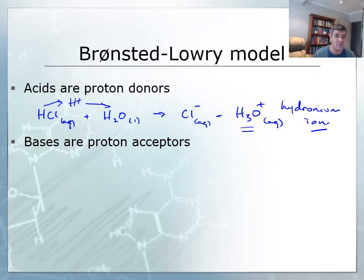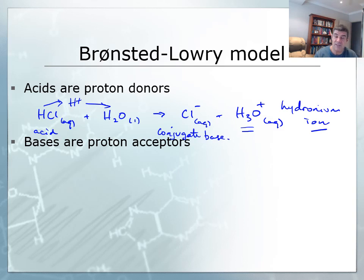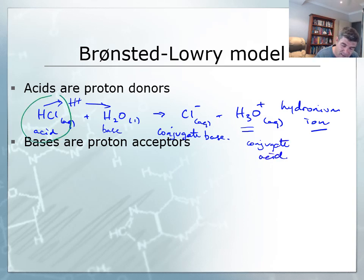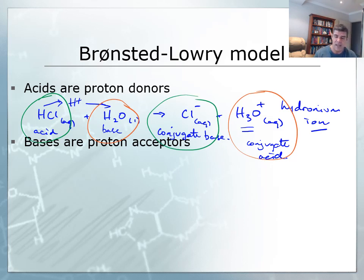We can look at pairs in the Bronsted-Lowry model. An acid that has lost or donated its proton becomes what we call a conjugate base. The substance which acts as a base — in this case water — accepts that proton, and therefore the hydronium ion is referred to as the conjugate acid. So we have two pairs: an acid and its conjugate base form one pair, and a base and its conjugate acid form another. They are related to each other by the hydrogen ion or proton, which is either lost or gained between species.